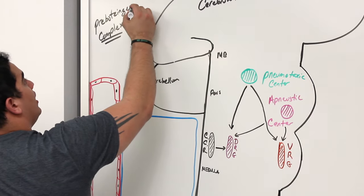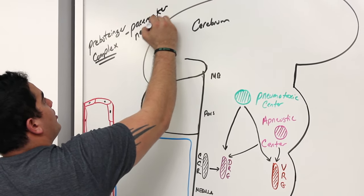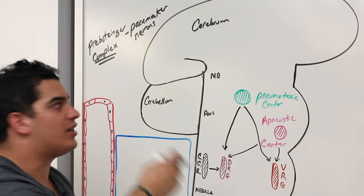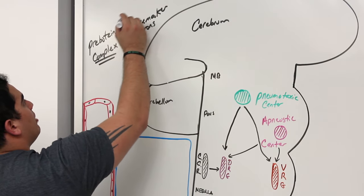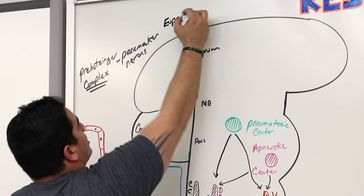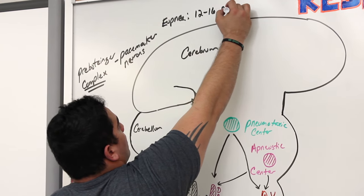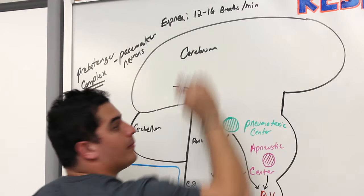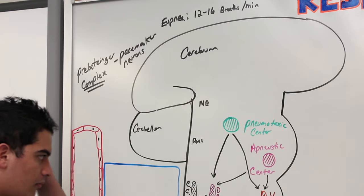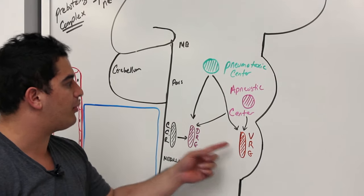These pacemaker neurons help set the pace. The normal term for this is eupnea — normal, quiet breathing at about 12 to 16 breaths per minute. That is the job of the pre-Bötzinger complex. The Bötzinger complex controls expiration; the pre-Bötzinger is the pacemaker.